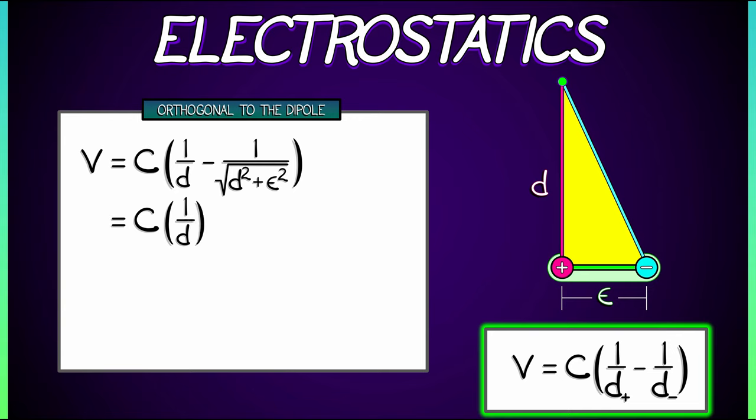If I take this and factor out a one over D, then what do I have left over? I've got C times one over D times quantity one, factoring out from the first term. Factoring out from the second term gives me a minus quantity one plus epsilon squared over D squared all to the negative one half power.